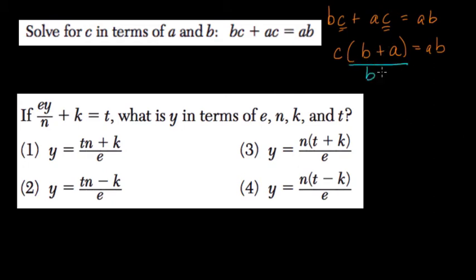So get rid of B plus A. Divide both sides by B plus A. Now we can't simplify this AB over B plus A, but that wasn't our goal.